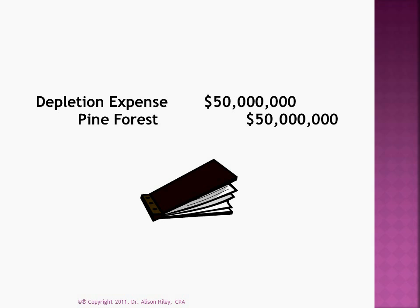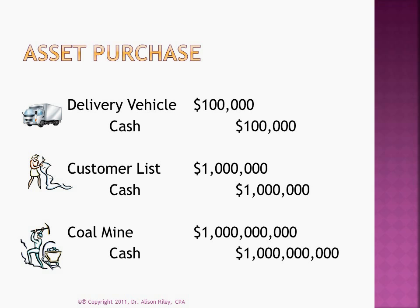Here is the journal entry to record depletion of the pine forest. Let's back up now and dot a few i's and cross a few t's. This slide shows example journal entries to record the initial purchase of some long-lived assets, with cash purchases illustrated for simplicity. To recap: the delivery vehicle is a capital asset expensed through depreciation; the customer list is an intangible asset expensed through amortisation; the coal mine is a wasting asset expensed through depletion. The collective term for all three processes, by the way, is amortisation. I guess accountants aren't good at thinking up unique names.